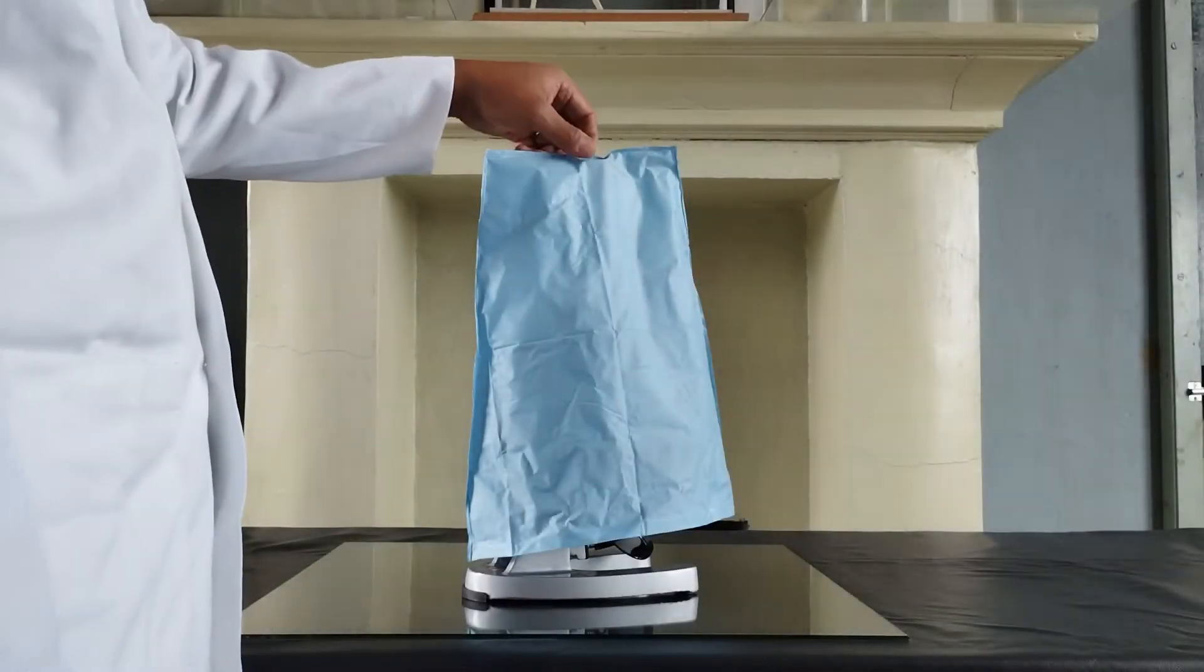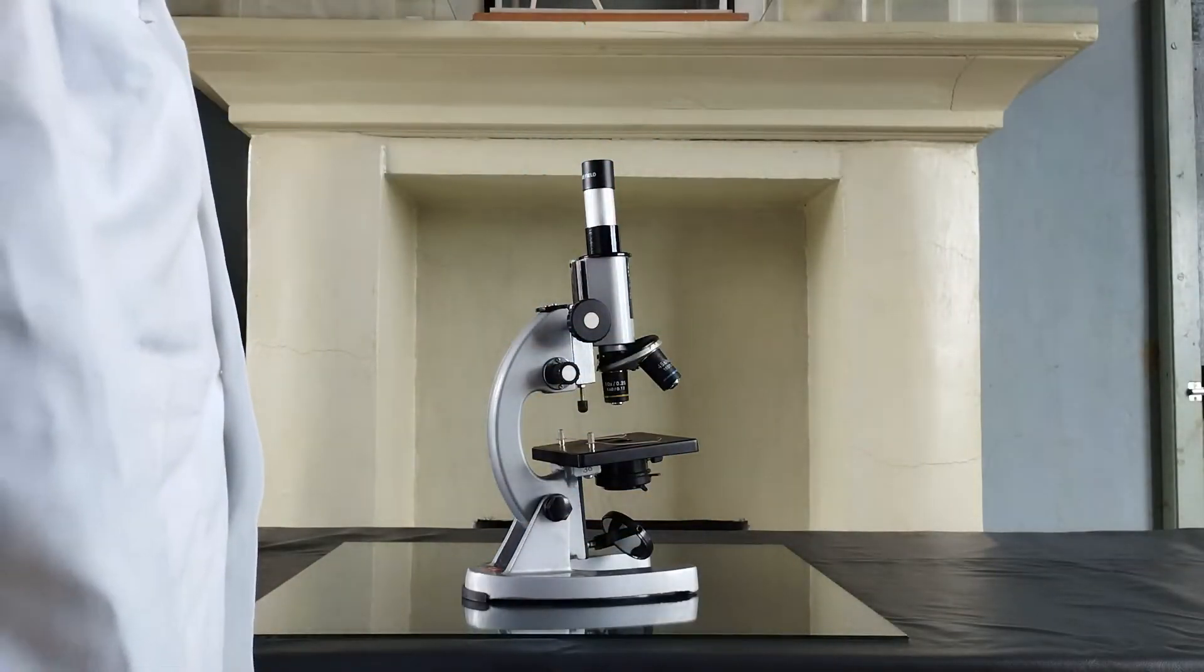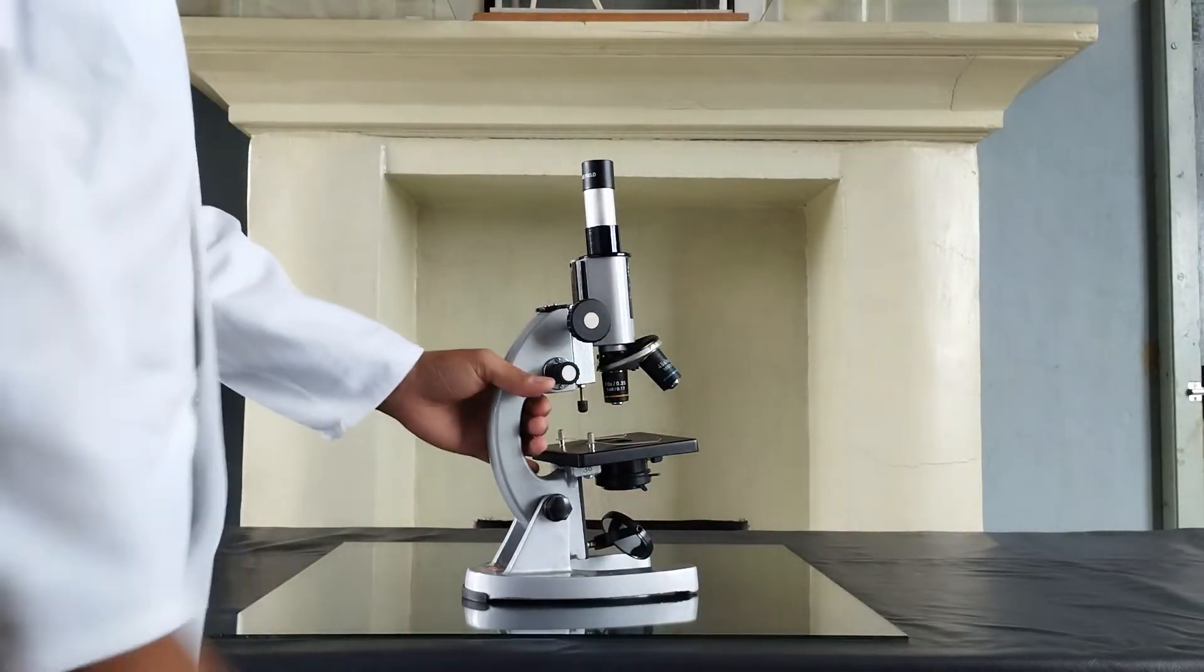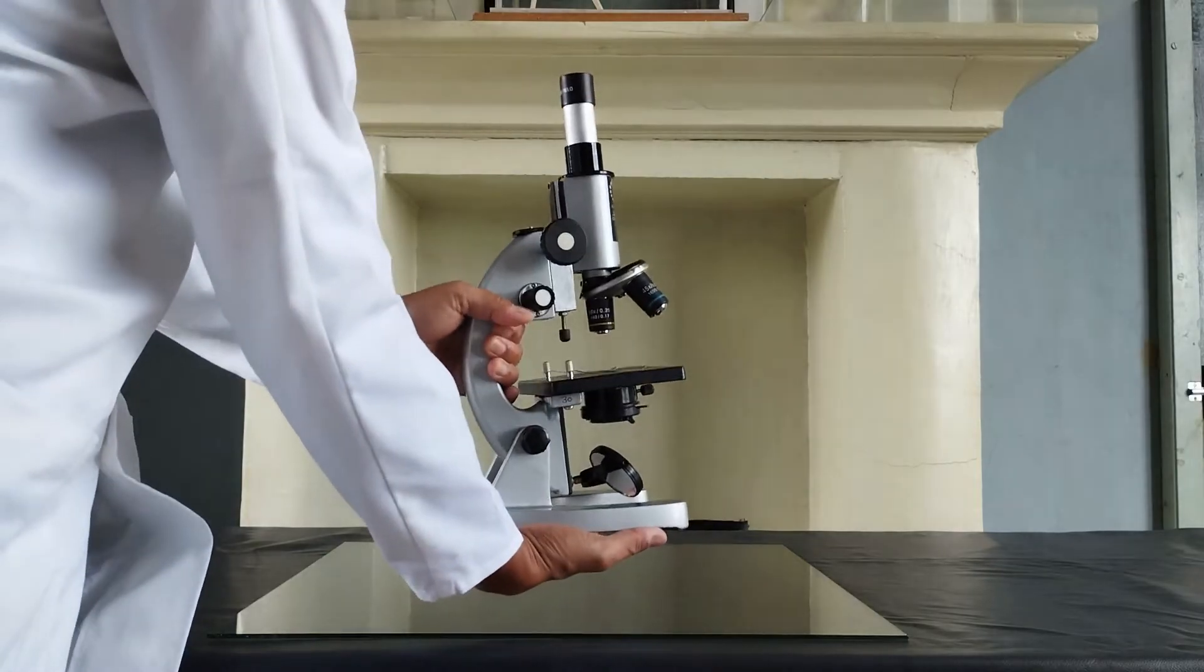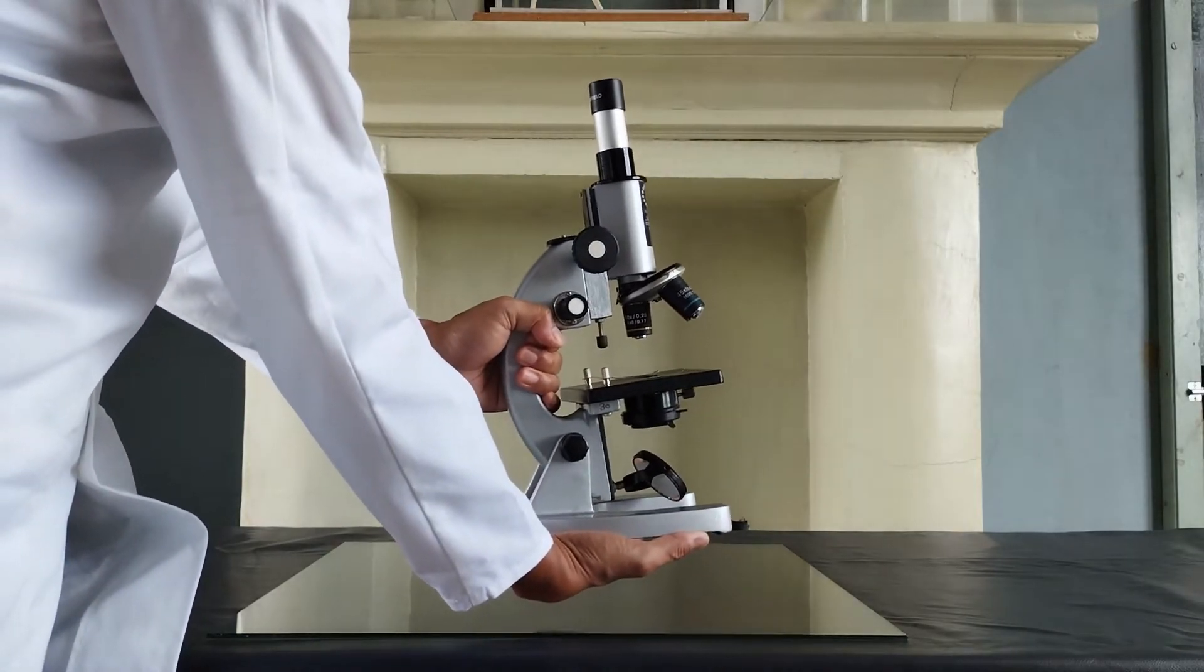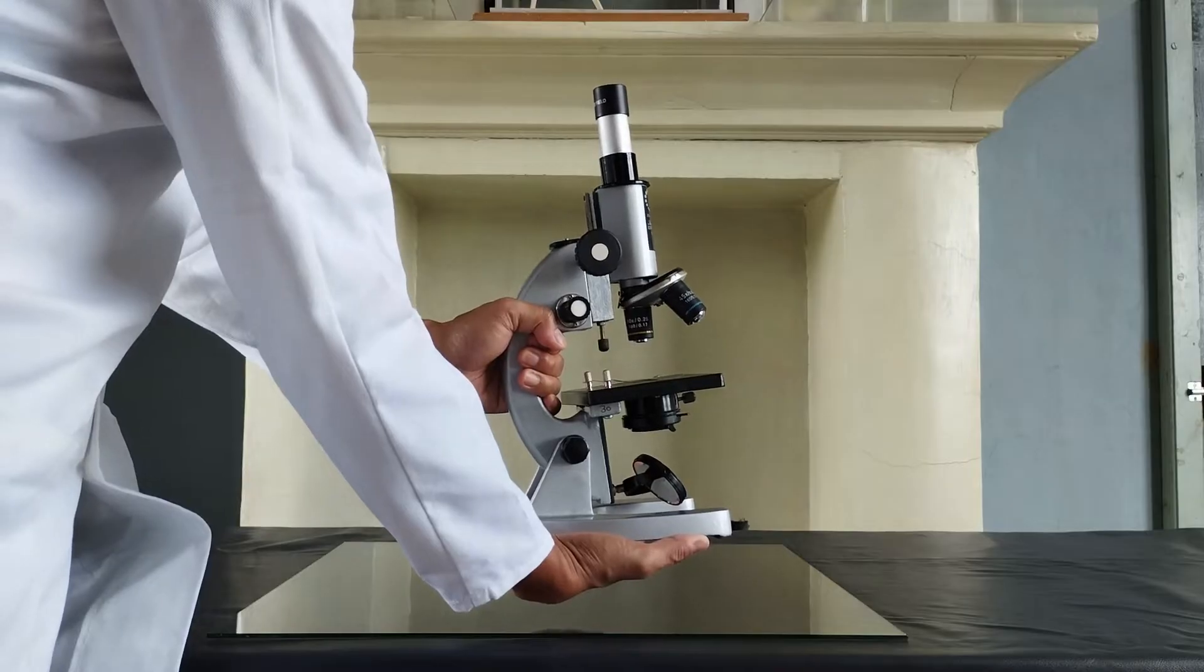Once you remove the microscope from its box, bring it to the working table by holding it with both hands, one hand firmly holding the arm of the microscope and the other hand supporting the base of the microscope, like so.